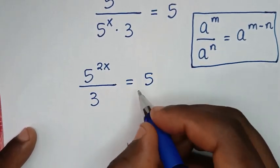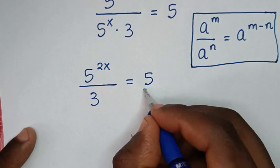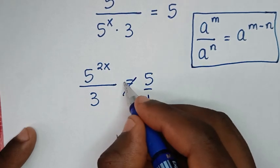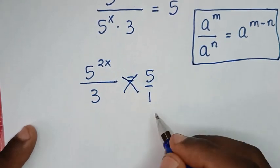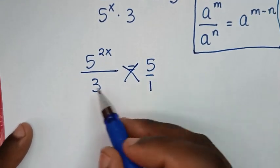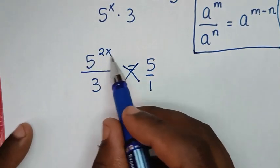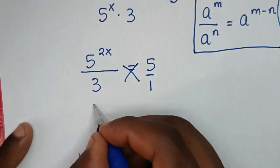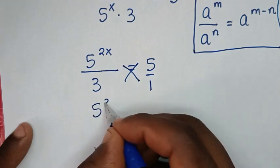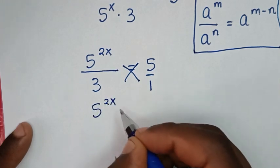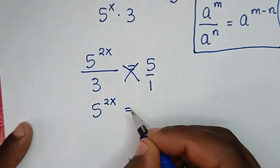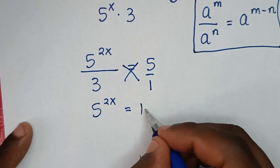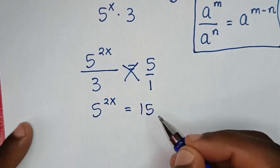In the next step, 5 is the same as 5 over 1, so we cross multiply. It will be 5 power of 2x times 1, so 5 power of 2x is equal to 3 times 5, which is 15.